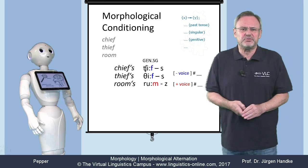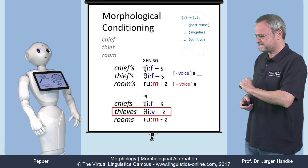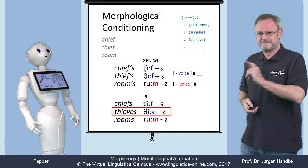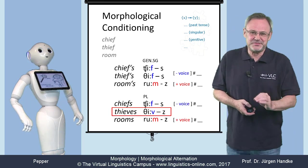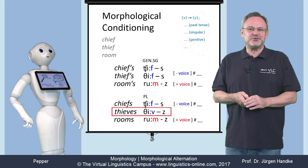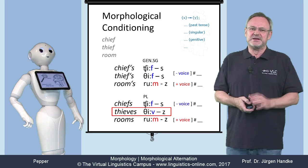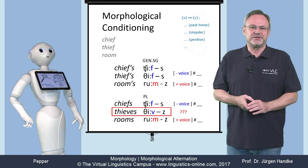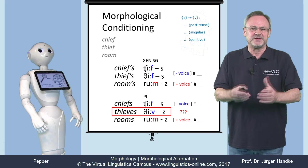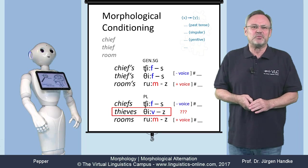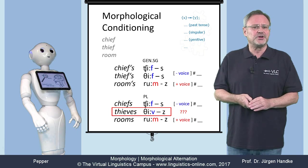But what about the plural forms? No problem for chiefs and rooms. But what about thieves? It has a voiced plural form. How do I know? Aha! You did it right! Chiefs and rooms are phonologically conditioned not only in their genitive forms, but also in their plural forms. But thieves behaves differently in a particular morphological context, namely in the plural. This phenomenon, where the choice of an allomorph is determined morphologically, is referred to as morphological conditioning.